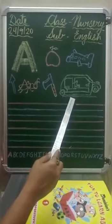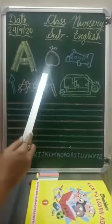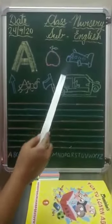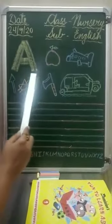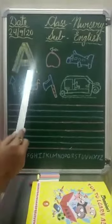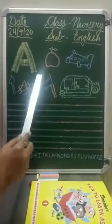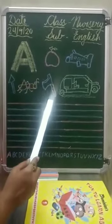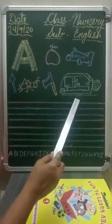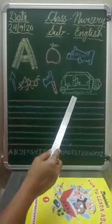Now kids, speak and repeat. A for apple — A, A, apple. A for aeroplane — A, A, aeroplane. A for arrow — A, A, arrow. A for ant — A, A, ant. A for x — A, A, x. A for auto rickshaw — A, A, auto rickshaw.